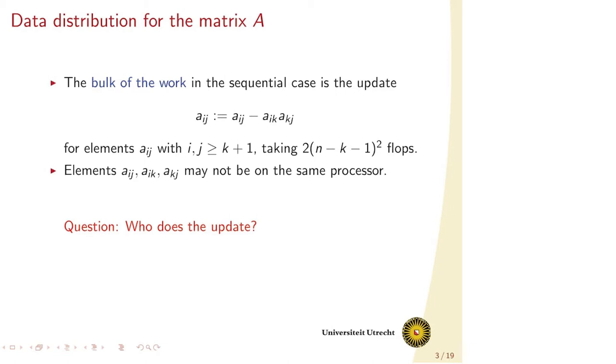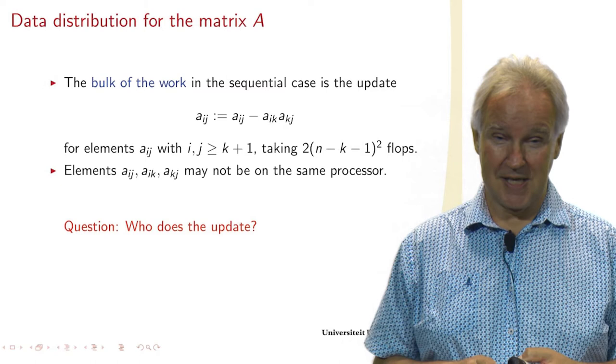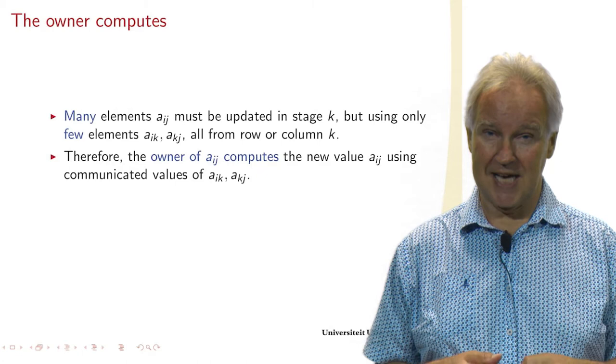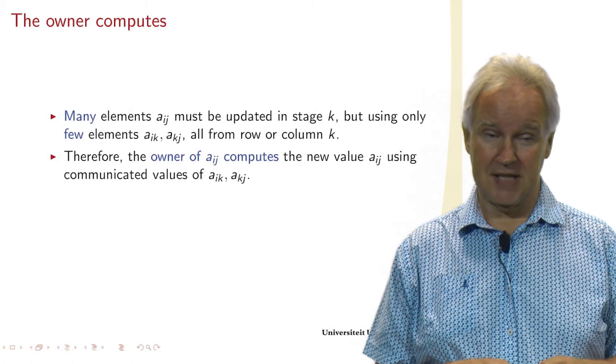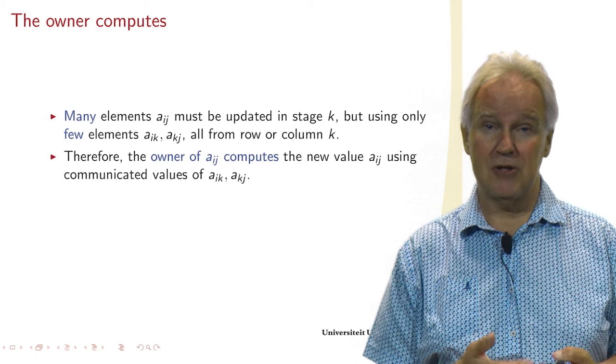You may have pondered the answer. Well, there are two types of elements. The matrix element AIJ that must be updated - there are many such elements. On the other hand, the element AIK and AKJ that we use, they are all from either row K or column K, so there are only few of those.